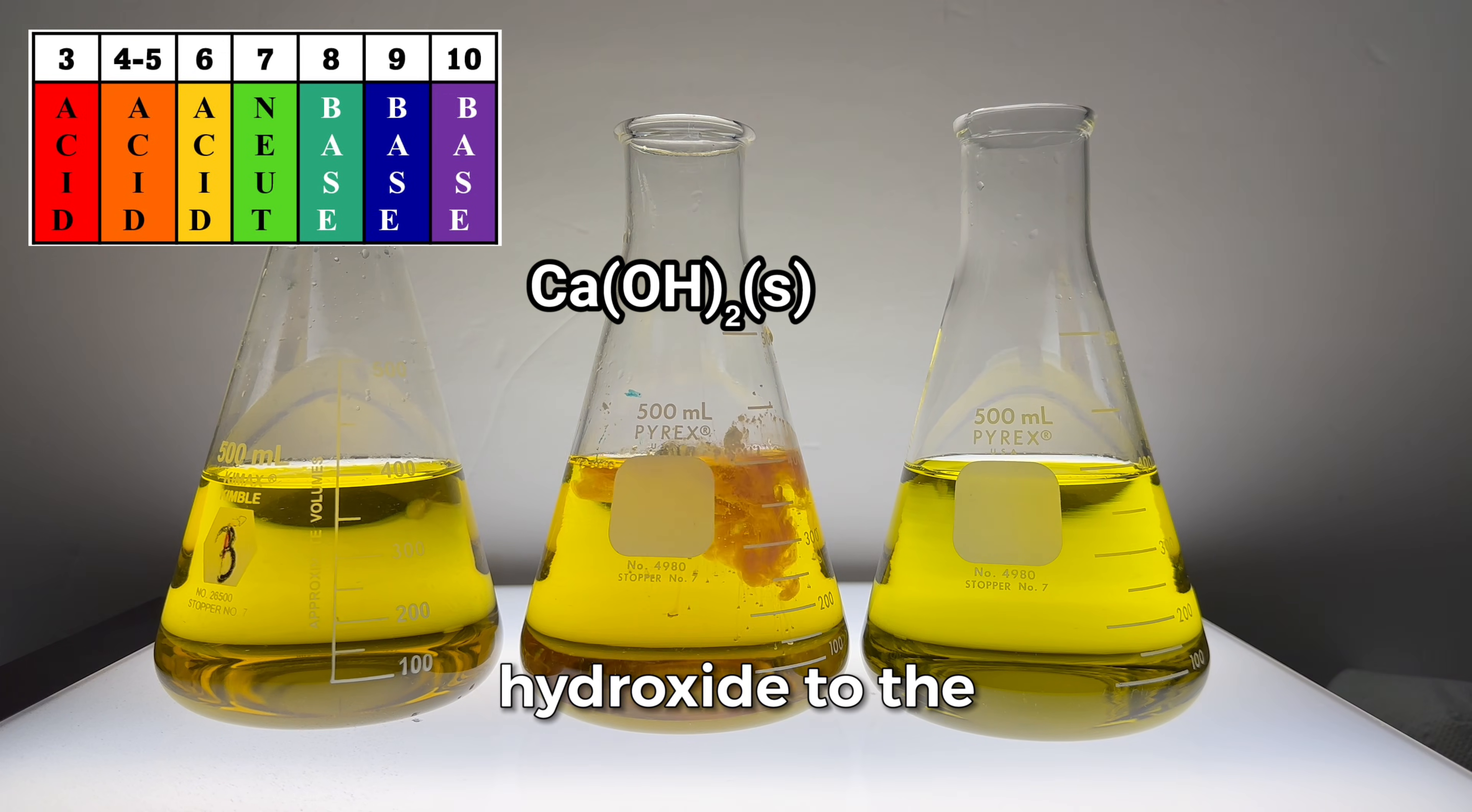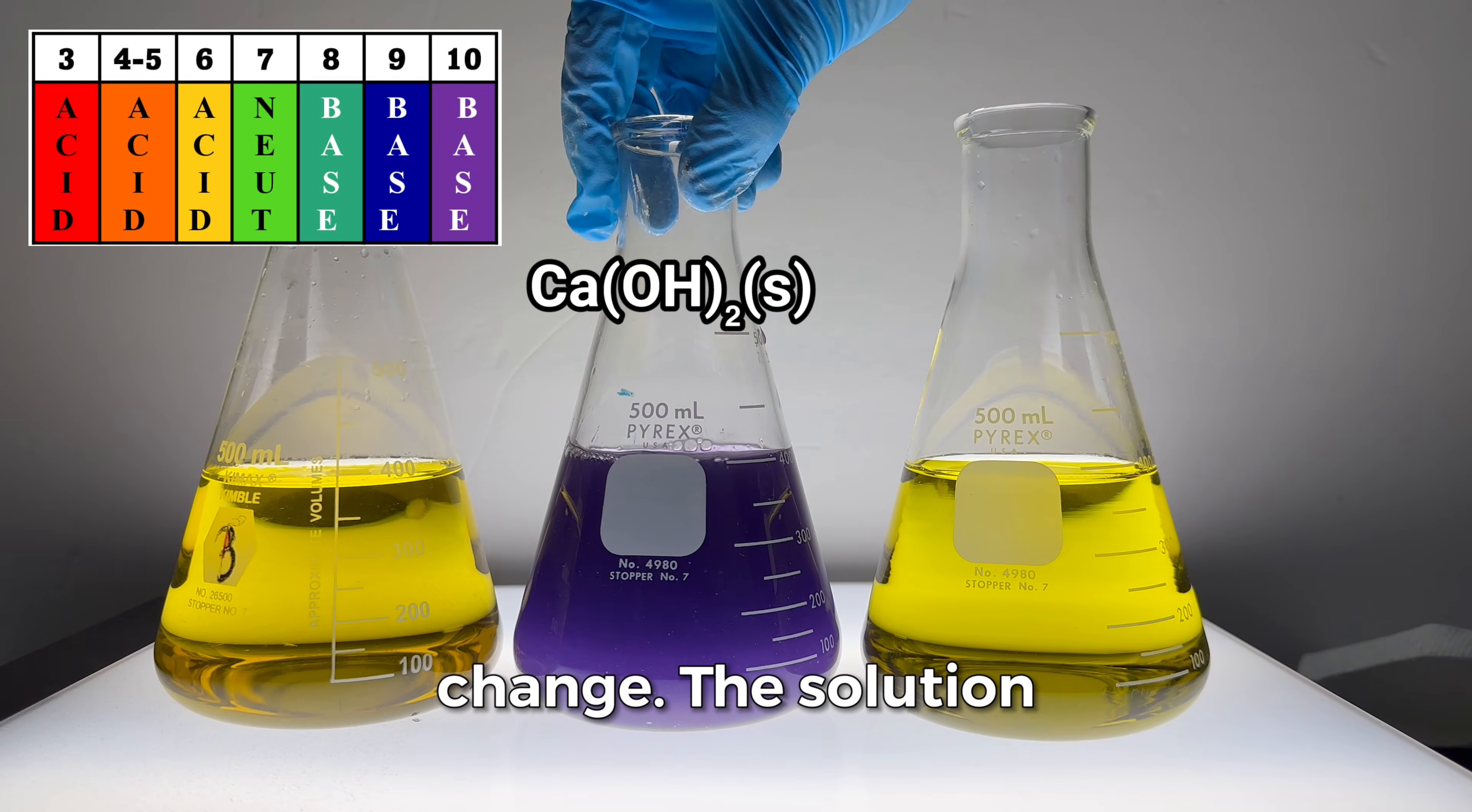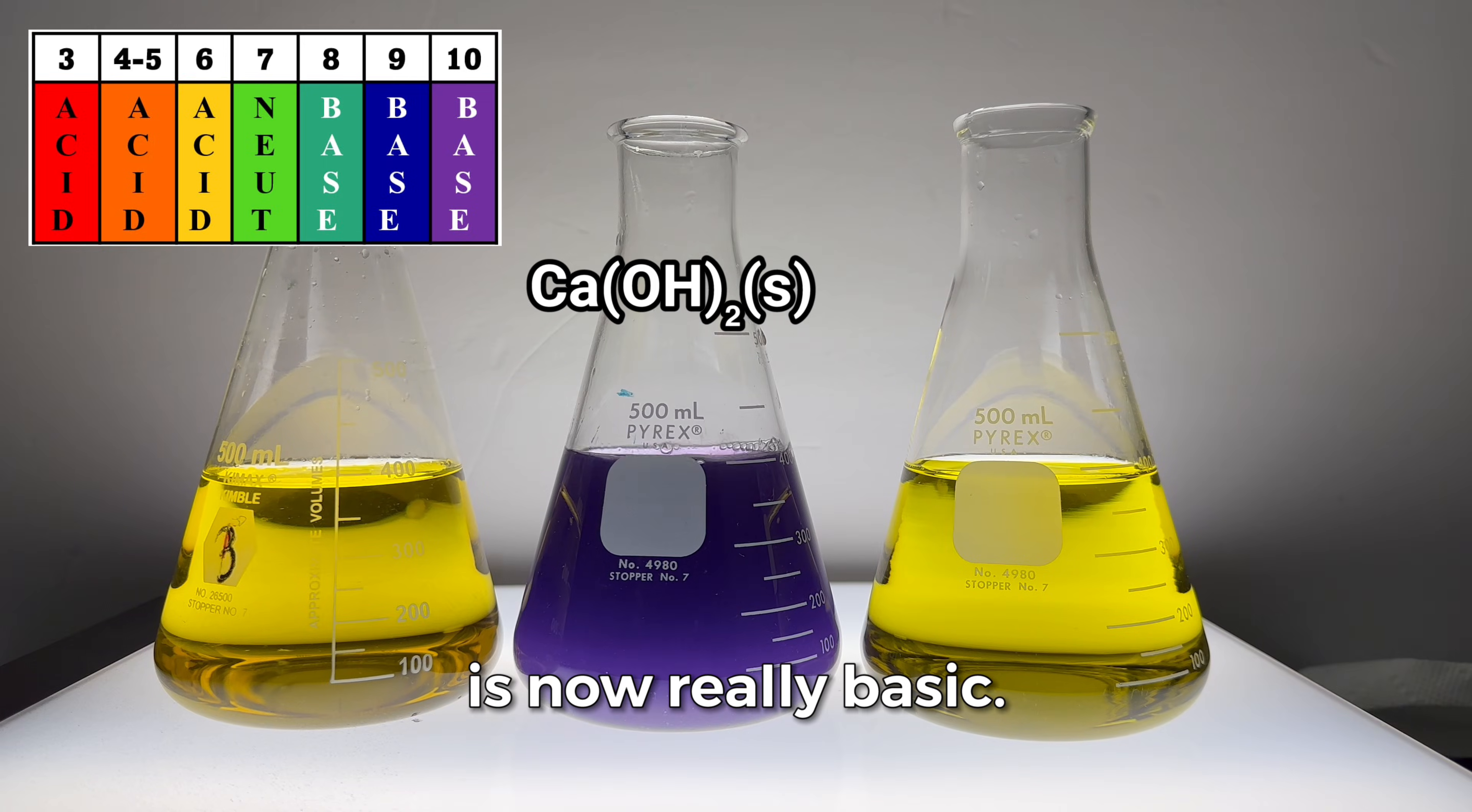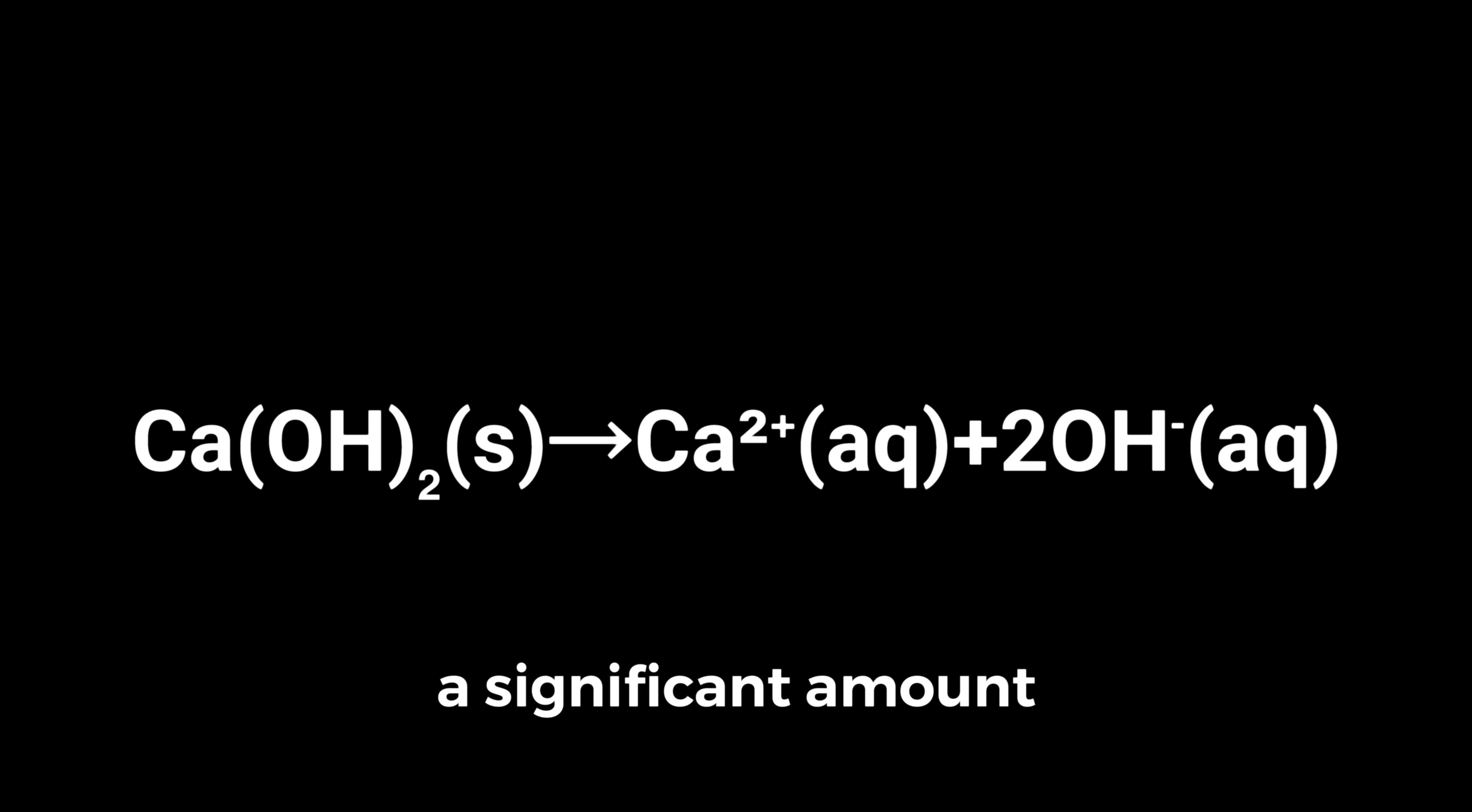Now let's add some calcium hydroxide to the middle flask. Whoa, that's a huge color change. The solution is now really basic. This happens because even though calcium hydroxide is sparingly soluble, enough of it dissolves to release a significant amount of hydroxide ions into the water.